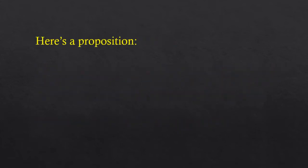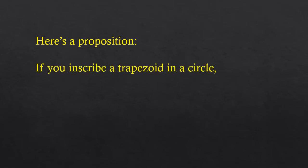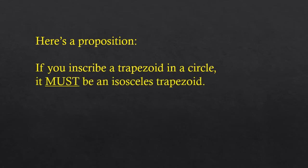Here's the proposition: if you take a trapezoid and you inscribe it into a circle, then that trapezoid has to be an isosceles trapezoid.